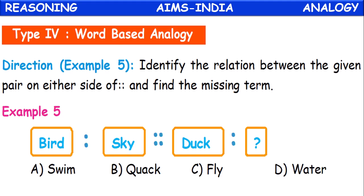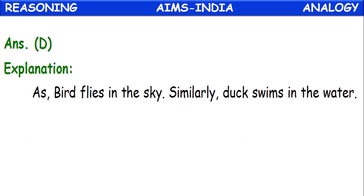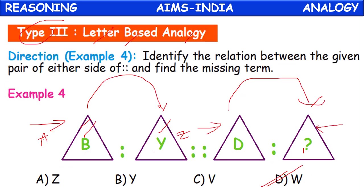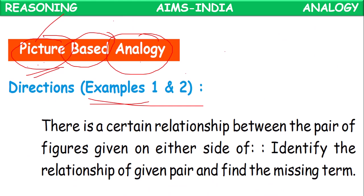Next is word-based analogy — Type 4. If bird is related to sky, then duck is related to what? A bird flies in the sky. Duck will swim — swim in water. Duck swims in the water, just as a bird flies in the sky. Option D is the correct answer. Like this, we have many types of analogy: word-based, letter-based, number-based, and picture-based. Based on the first pair relationship, we identify the relationship in the second pair.